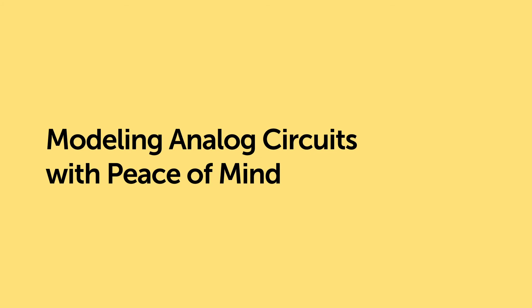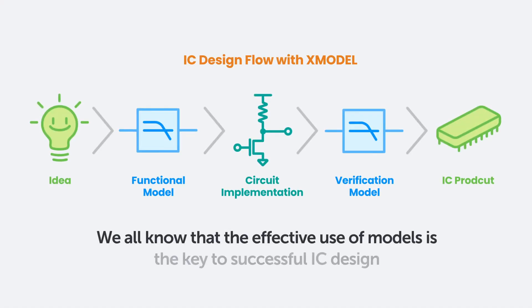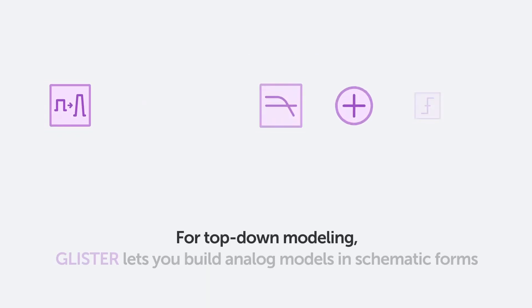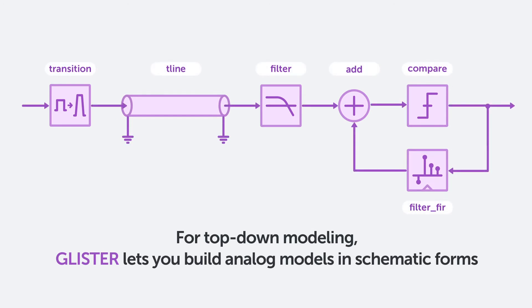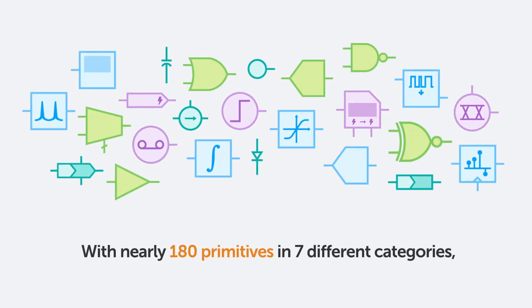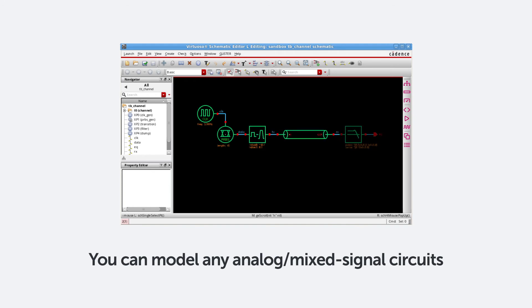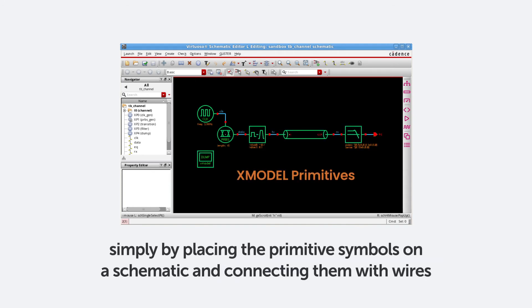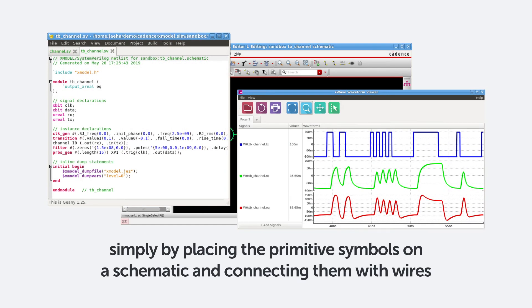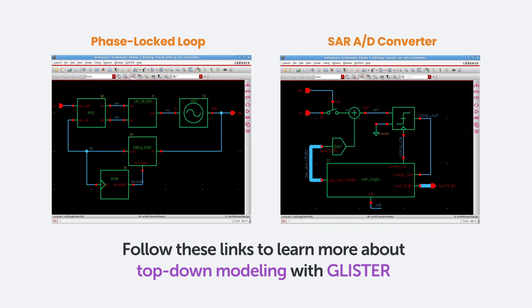Modeling analog circuits with peace of mind. The effective use of models is the key to successful IC design. XModel supports both top-down and bottom-up modeling. For top-down modeling, Glister lets you build analog models in schematic forms. With nearly 180 primitives in 7 different categories, you can model any analog mixed-signal circuits simply by placing primitive symbols on a schematic and connecting them with wires. To learn more about how you can model a phase-lock loop or a SAR ADC with Glister, please follow these links.